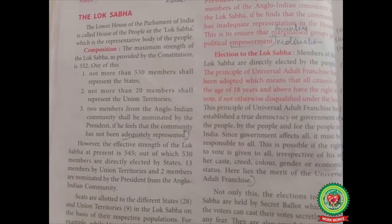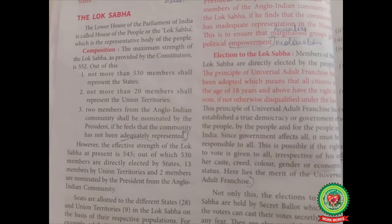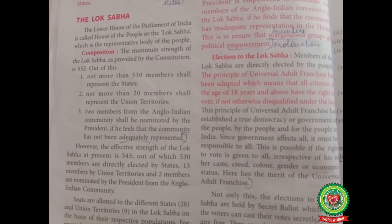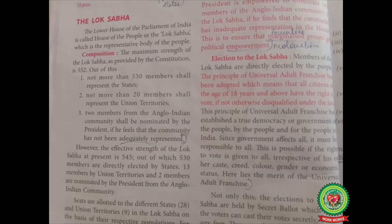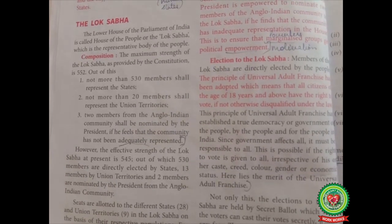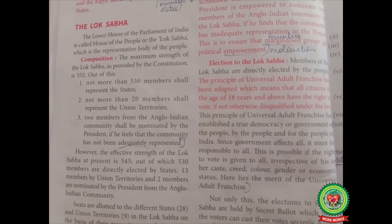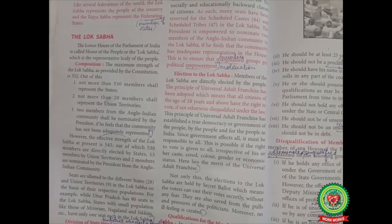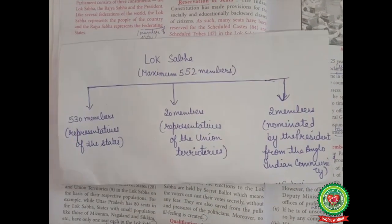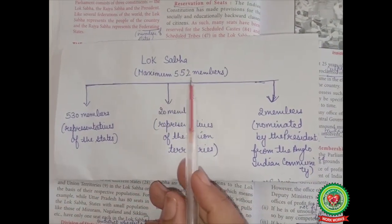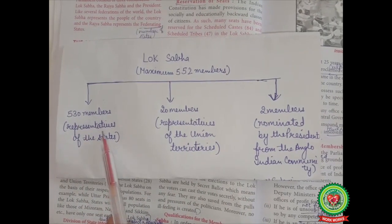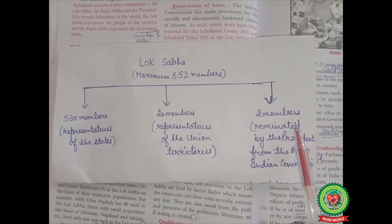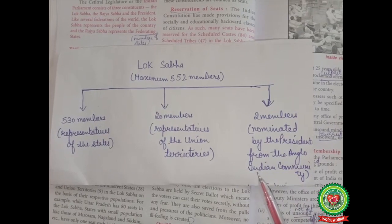The maximum strength of the house allotted by the constitution of India is 552. Out of it, 530 members are from the states, 20 members are from the union territories, and two members from the Anglo-Indian community shall be nominated by the president if its representation is found inadequate in the house. This is illustrated in a chart: Lok Sabha — maximum 552 members, 530 representatives of states, 20 representatives of union territories, two nominated by the president from the Anglo-Indian community.